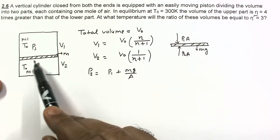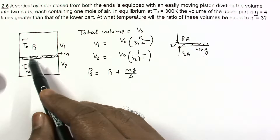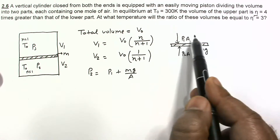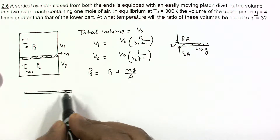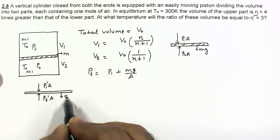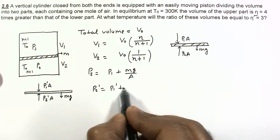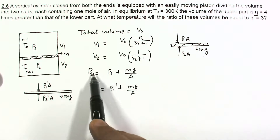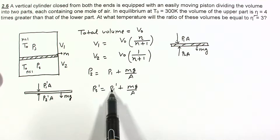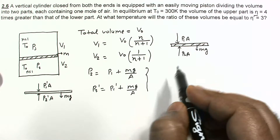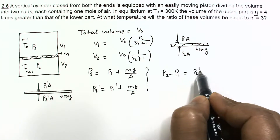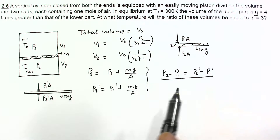If we change the temperature, the ratio will change to eta'. In the final equilibrium position, the pressures are P1' and P2', giving P2' = P1' + mg/A. The pressure difference initially is P2 − P1 = mg/A, and the pressure difference finally is also P2' − P1' = mg/A. Therefore, the pressure difference is the same in both equilibrium states: P2 − P1 = P2' − P1'.